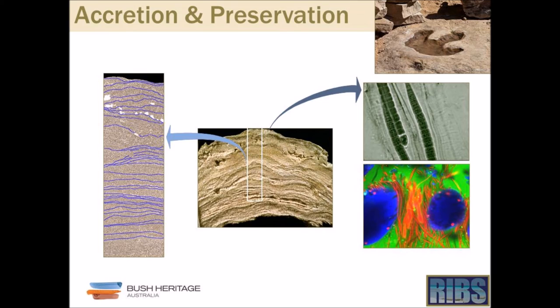You can see how they trap sediments at the surface. The microbes are photosynthesizers — they take energy from the sun. If sediments are covering them, they creep up on top of the grains and bind the grains down so they're at the surface again and can photosynthesize.